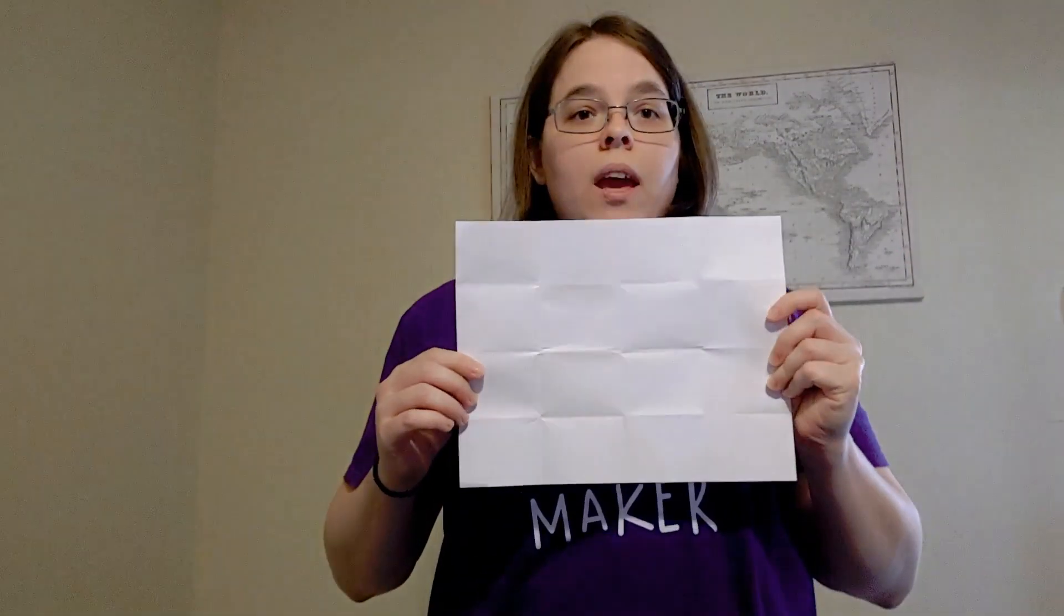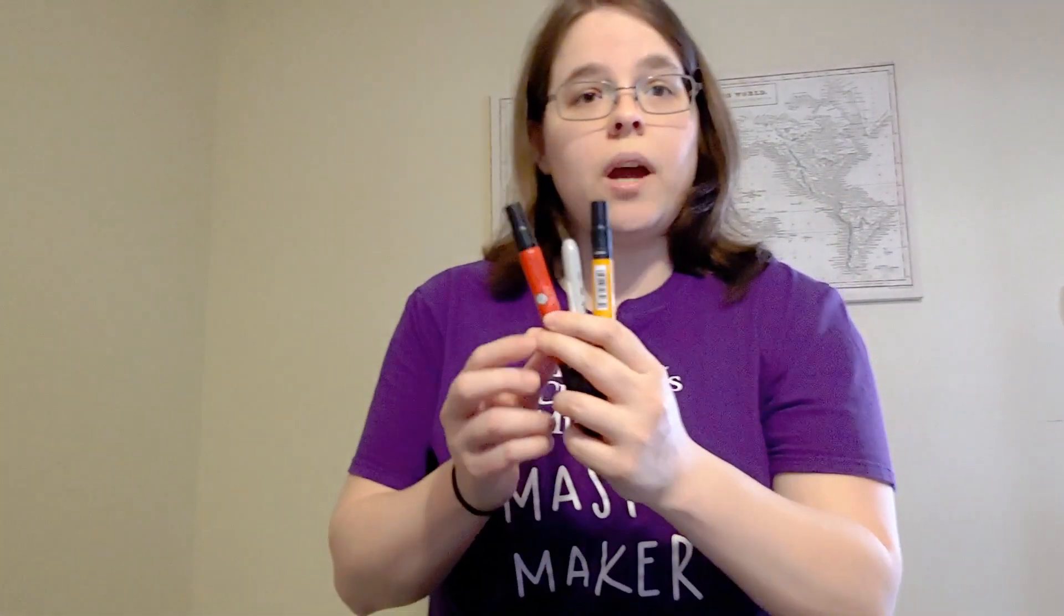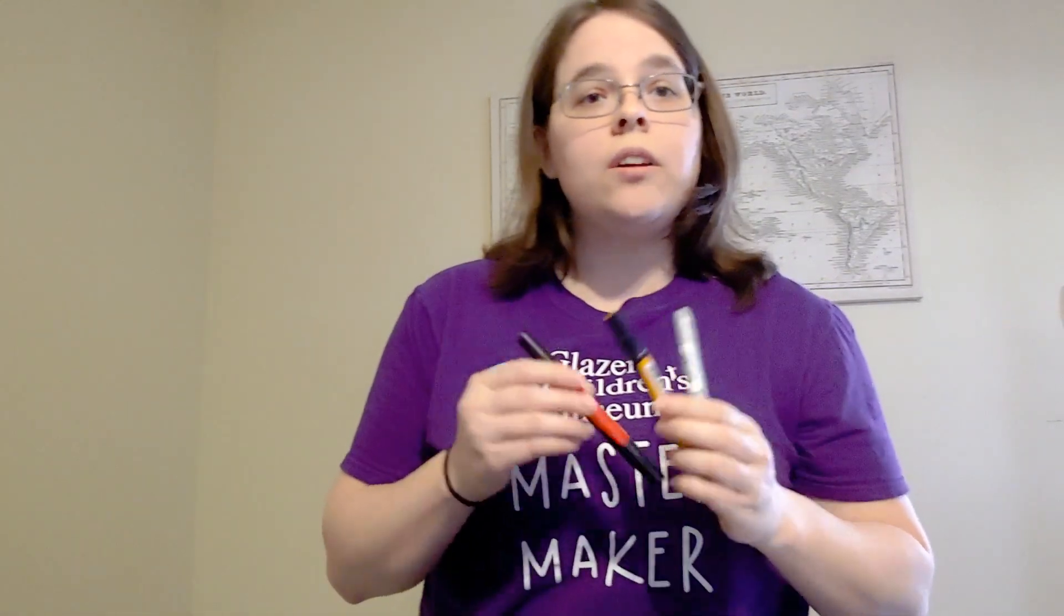For today's activity, we're going to be creating a board game and you're going to need a few supplies. The first thing you're going to need is a sheet of paper. A blank white sheet of paper works just fine. You can also use lined or ruled materials, anything you have around works fine. Then the next thing you're going to need is a few markers. You can pick some of your favorite colors. You're going to have an opportunity to color in the board that we make for today's activity.